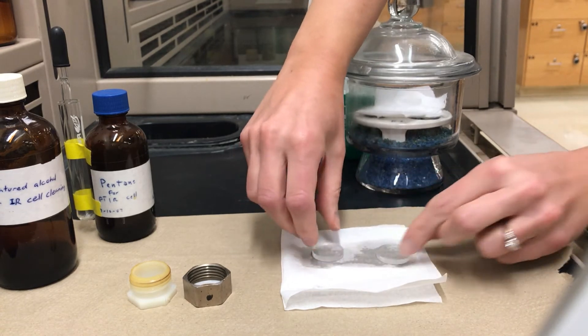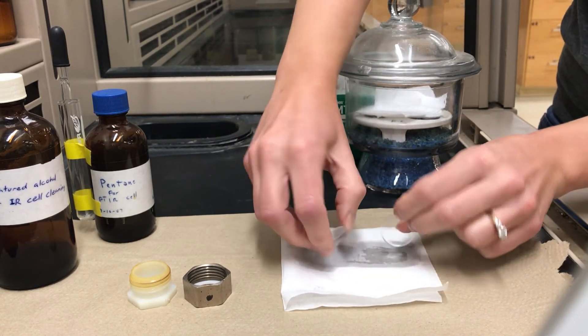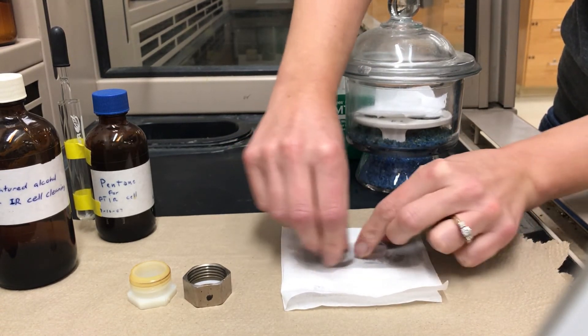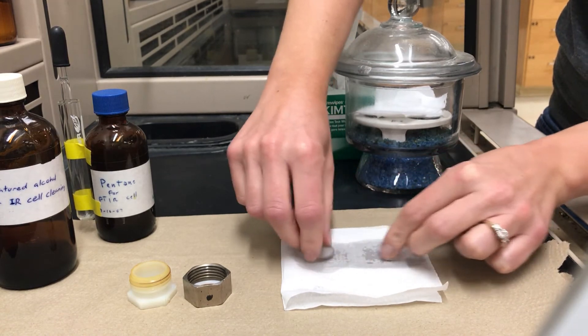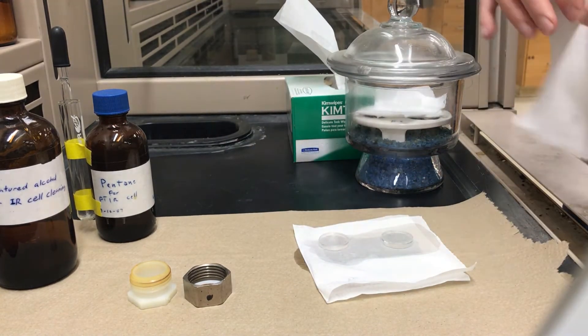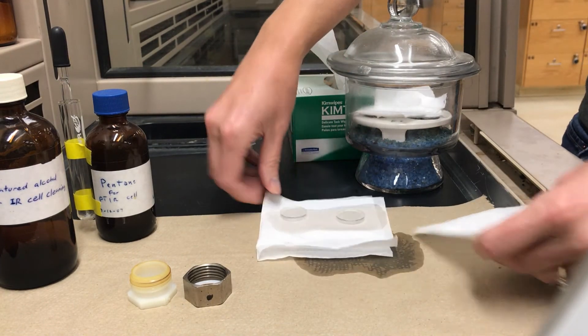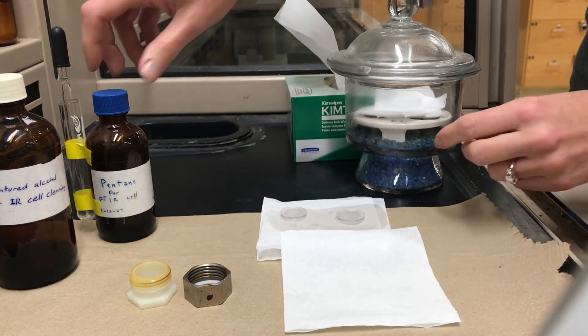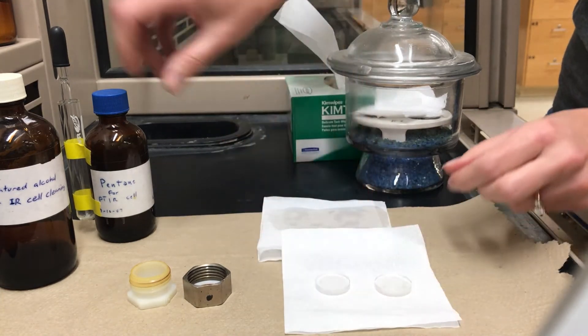So touching them on the sides I can rub the surfaces on that wet kim wipe and then that will clean the surface off. Next I get a second kim wipe and I put the plates on there because I'm going to use a different solvent.